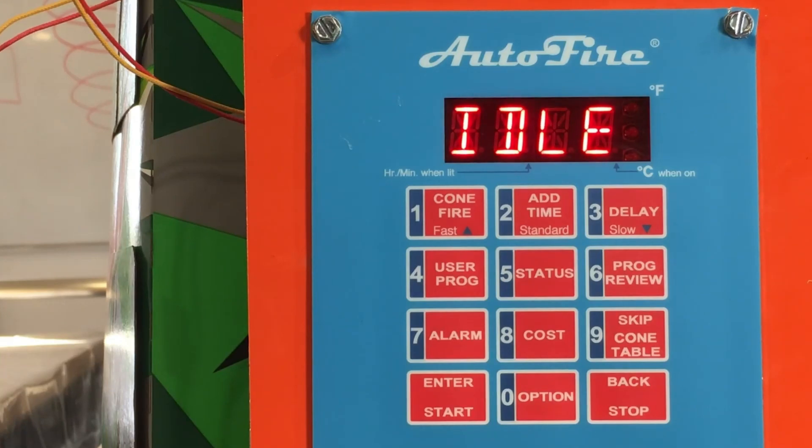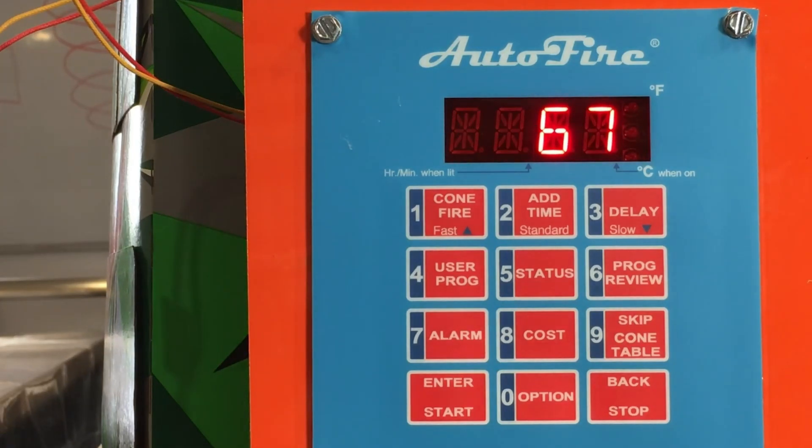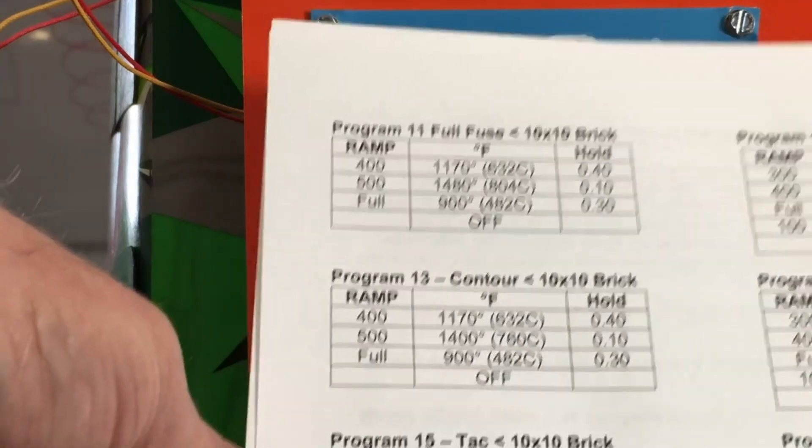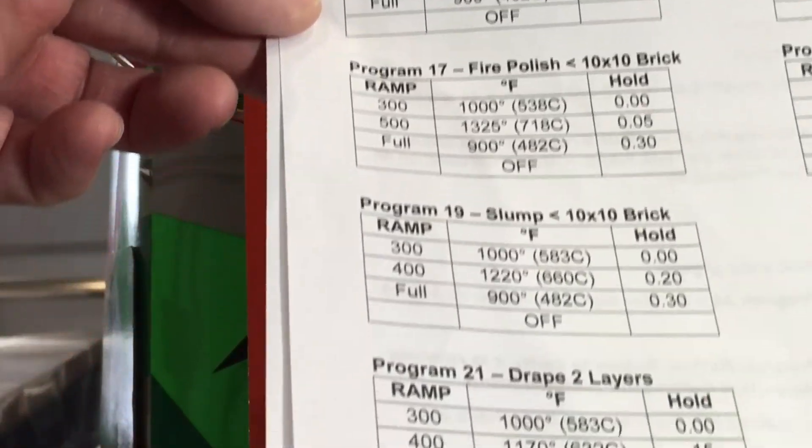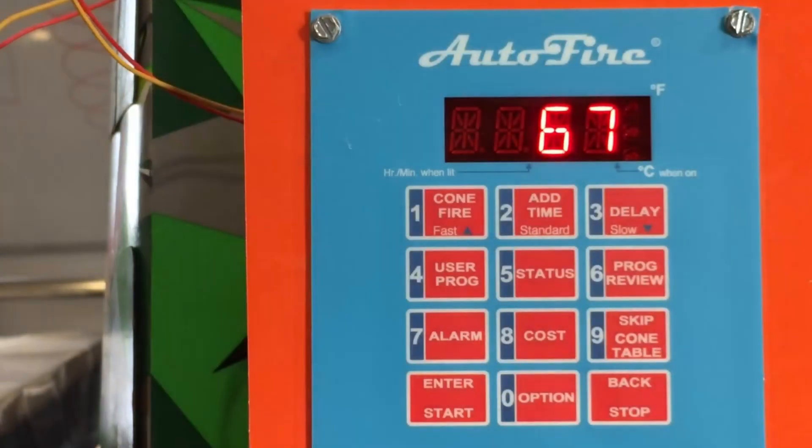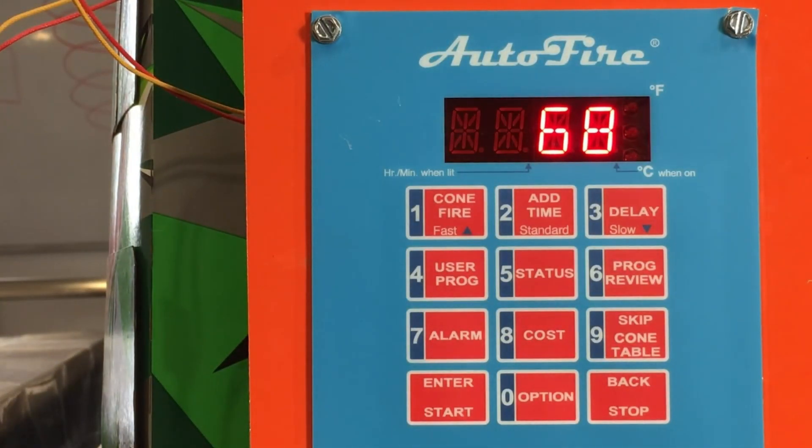This controller has 35 total programs. Programs 1 through 10 are blank which means you can go in and put in whatever you like. Programs 11 through 35 are actually pre-programmed ones that we have put in this controller to help get you a jump start, to help you get going a little quicker. While they may not be perfect programs, they are adjustable.